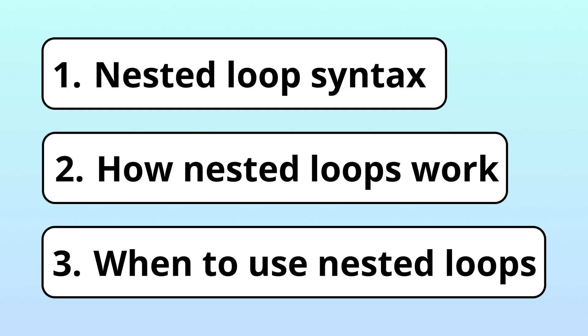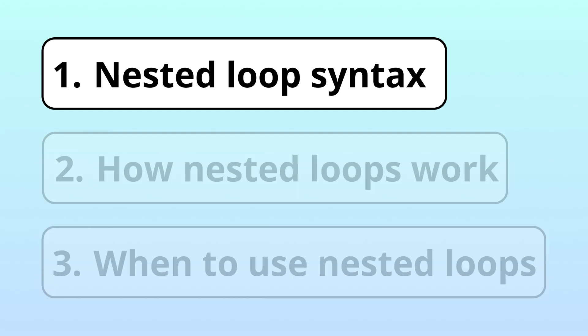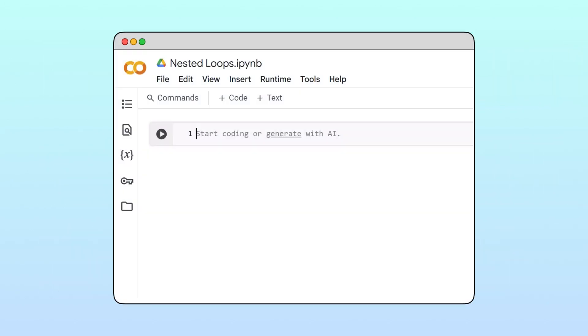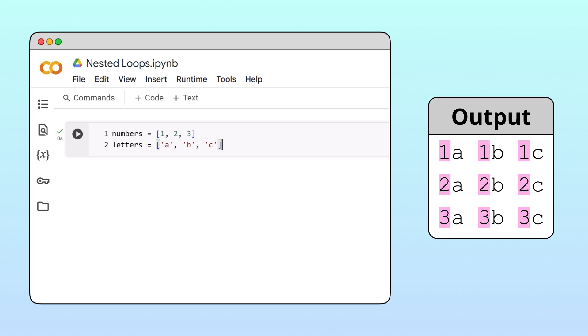Let's first familiarize ourselves with the syntax of a nested loop with a simple example. Suppose we have a list of numbers and a list of letters. And we'd like to create this grid where each row corresponds to a number and each column corresponds to a letter.